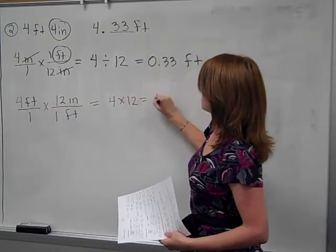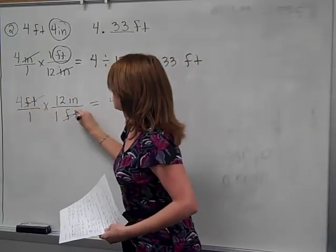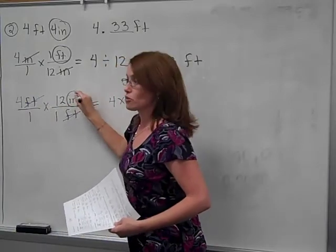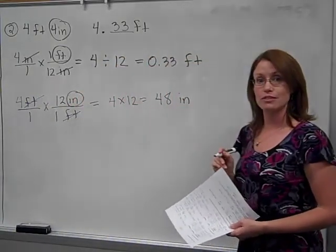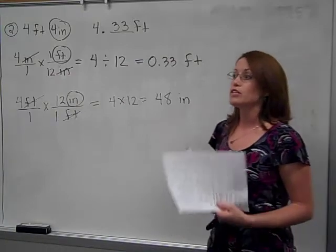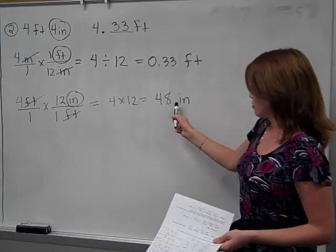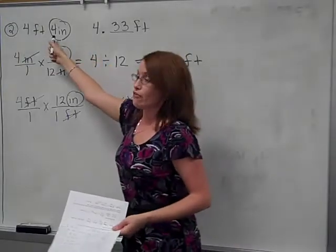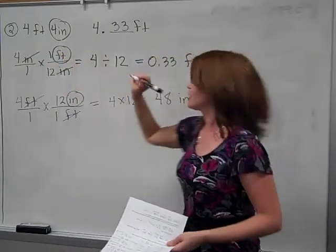So 4 times 12. So it looks like I'm at 48. So the feet cancel out, the inches are left. So that means this has to be 48 inches. So what's the overall height? You have to add the 4 inches. So the 48 inches and the 4 inches for a total of 52 inches.